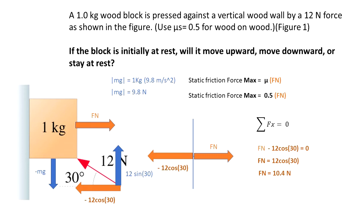We have that fn minus 12 cosine of 30 is equal to 0. I do some algebra and we know that fn is equal to 10.4 N.